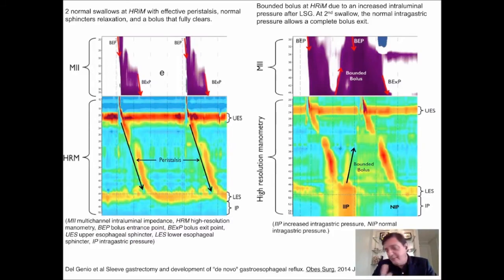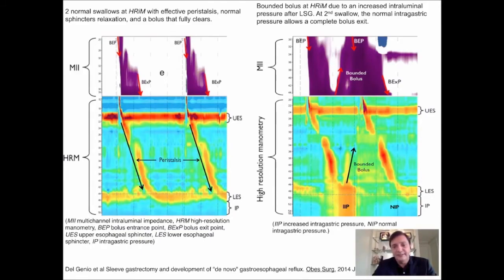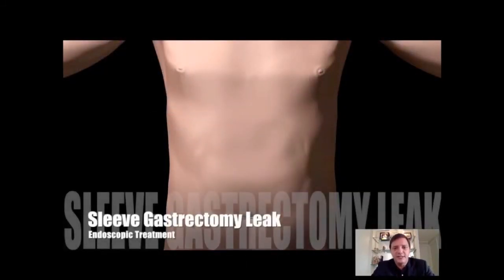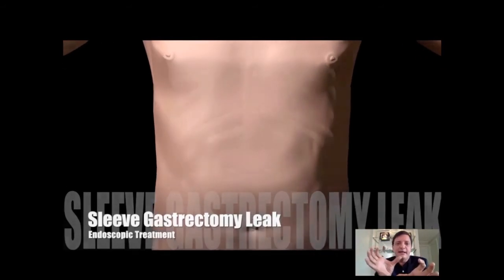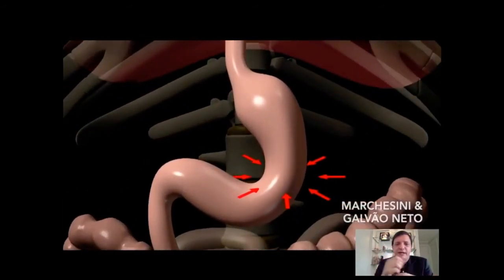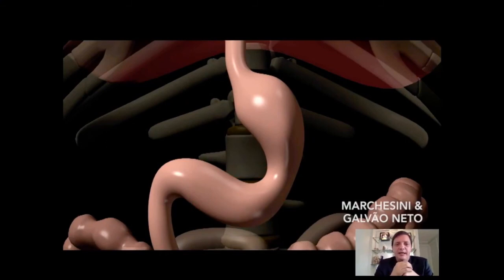Meaning that this hyper-pressive system with a weak spot can explain why the sleeve gastrectomy leaks on the narrow tube tend to become chronic. And this cartoon will try to explain to us that most of the times it's a twist or a narrowing between the body and the antrum.